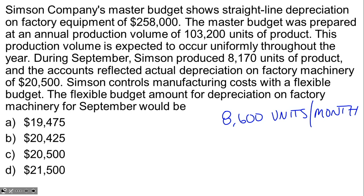The question asks: what is the flexible budget amount for depreciation on factory machinery for September? Sometimes flexible budget calculations get involved — determining cost per unit and so on — but this question is actually very simple. It's asking about depreciation, and the key insight is that depreciation is a fixed cost. Because it's a fixed cost, we don't allocate it to each individual unit; it isn't a variable cost like materials or labor.